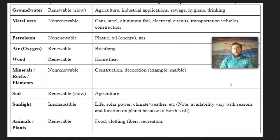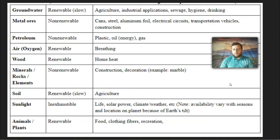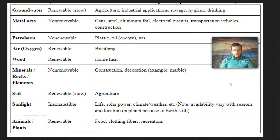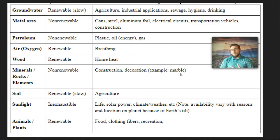We use metal ores for all kinds of things like steel, cans, aluminum foil, electrical circuits, transportation vehicles, and construction. We also use minerals, rocks, and elements — chemicals we use for decoration like marble, and others for chemical applications and construction. Petroleum is another non-renewable resource. We use it to make plastic, to make energy in power plants, and to make gas for our cars. But it's running out and not going to last forever.